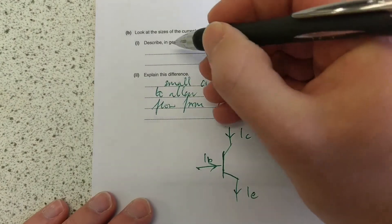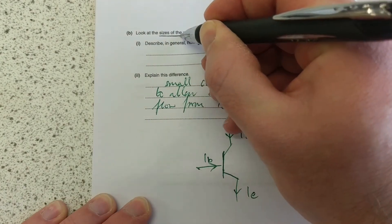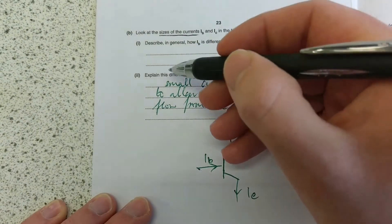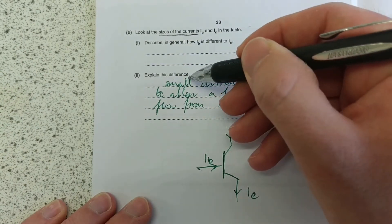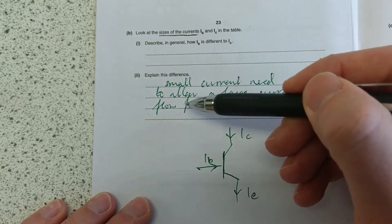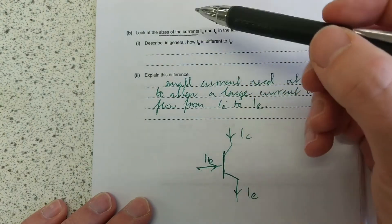So in this part, you need to look at the sizes of the currents to answer it. And in this part, you need to look at the sizes of the currents to answer it. Because this sub-part is part of that question B.